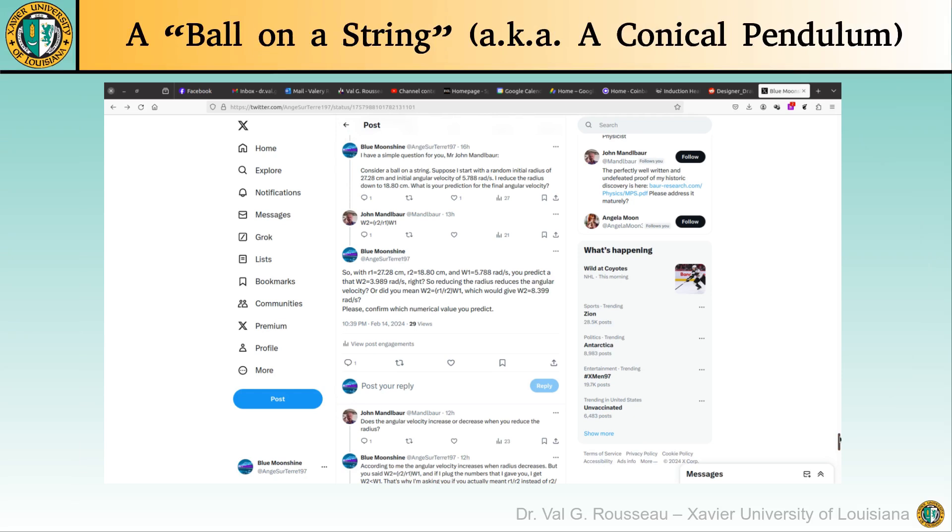I proposed him to consider the system that he calls with his baby language a ball on a string, and that normal people call a conical pendulum. I asked him what would be his prediction for the final angular velocity if we started with an initial angular velocity of 5.79 radians per second, and initial radius of 27.3 centimeters, and ended up with a final radius of 18.8 centimeters.